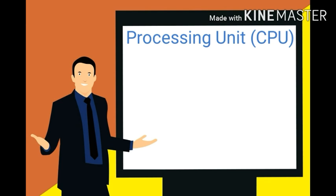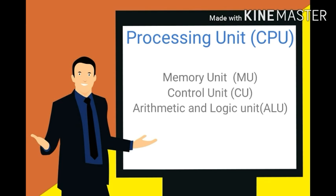So there are three main parts of the CPU. First one is Memory Unit (MU), second is Control Unit (CU), and third is Arithmetic and Logic Unit (ALU).